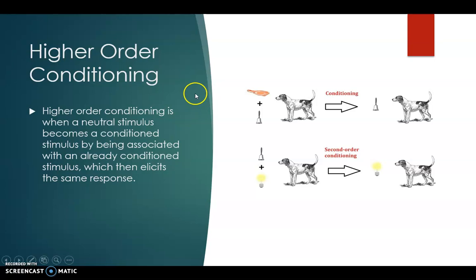Higher order conditioning. Higher order conditioning is when a neutral stimulus becomes a conditioned stimulus by being associated with an already conditioned stimulus, which then elicits the same response. Basically what this is saying is if we take the bell from Pavlov's experiment, and we get the dogs to associate the bell with a light, then eventually they will associate the light with the steak, and they will salivate at the scene of a light as well.